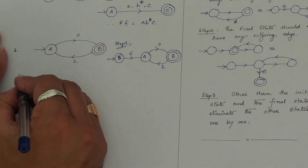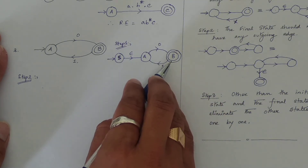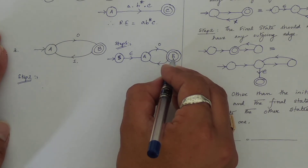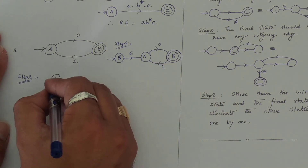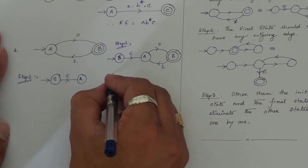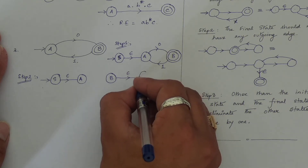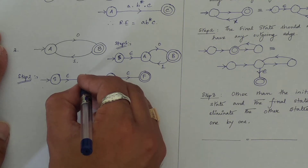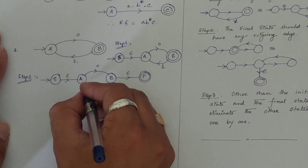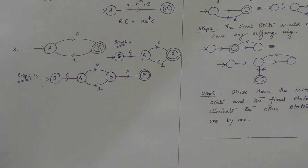Step two says the final state should not have any outgoing edge. This final state does have an outgoing edge, so I have to make it a normal state. S remains the initial state with an epsilon transition to A. B becomes a normal state and from B I take one more epsilon transition to a new final state — let it be F. From A there is a transition for 0, and from B there is a transition to A for 1. Now we need to eliminate other states apart from initial and final, one after another.